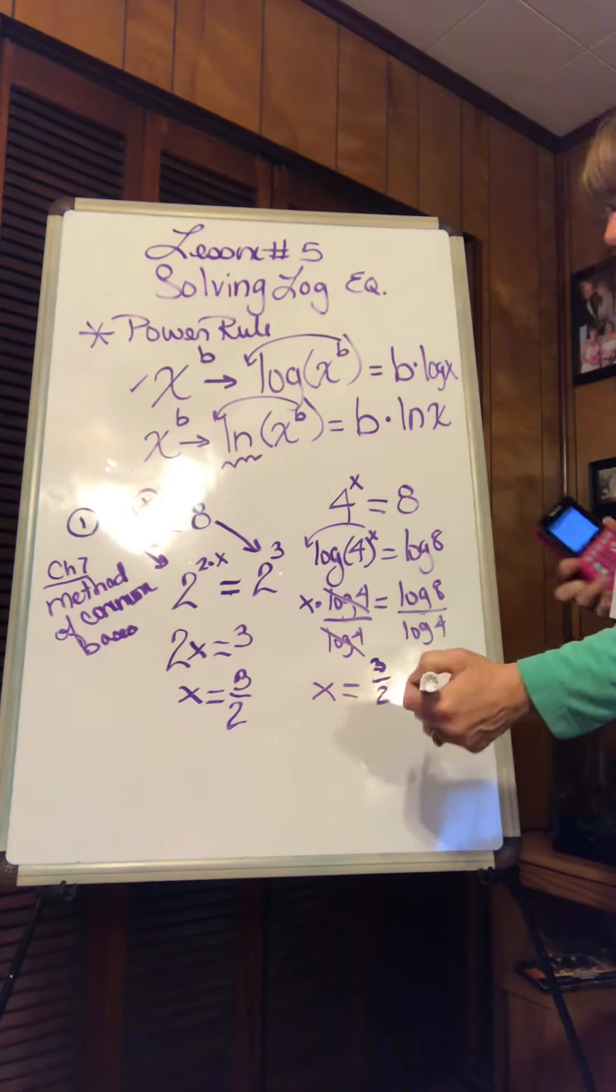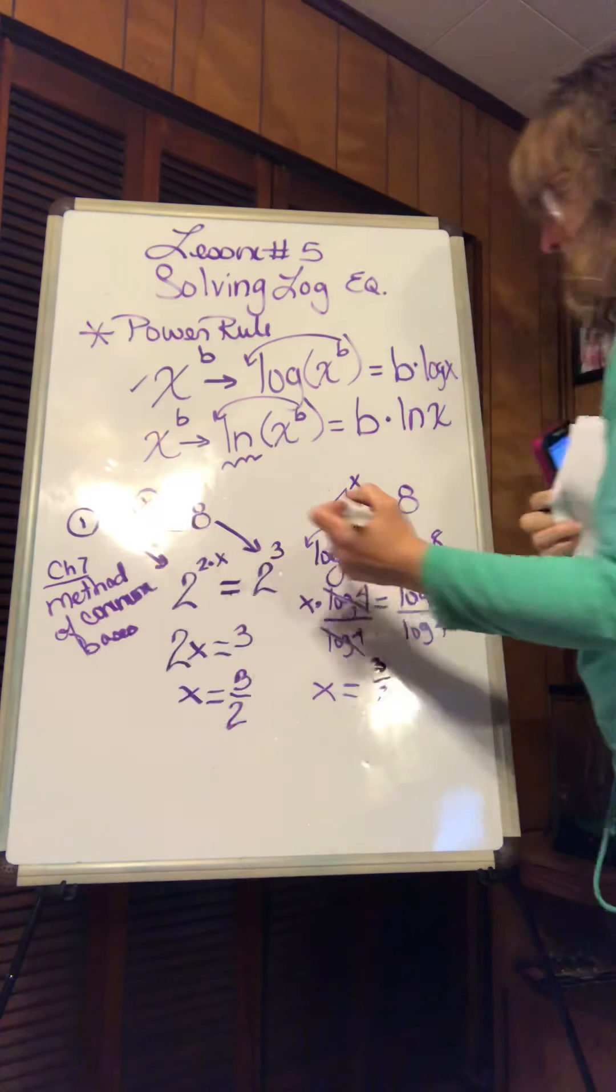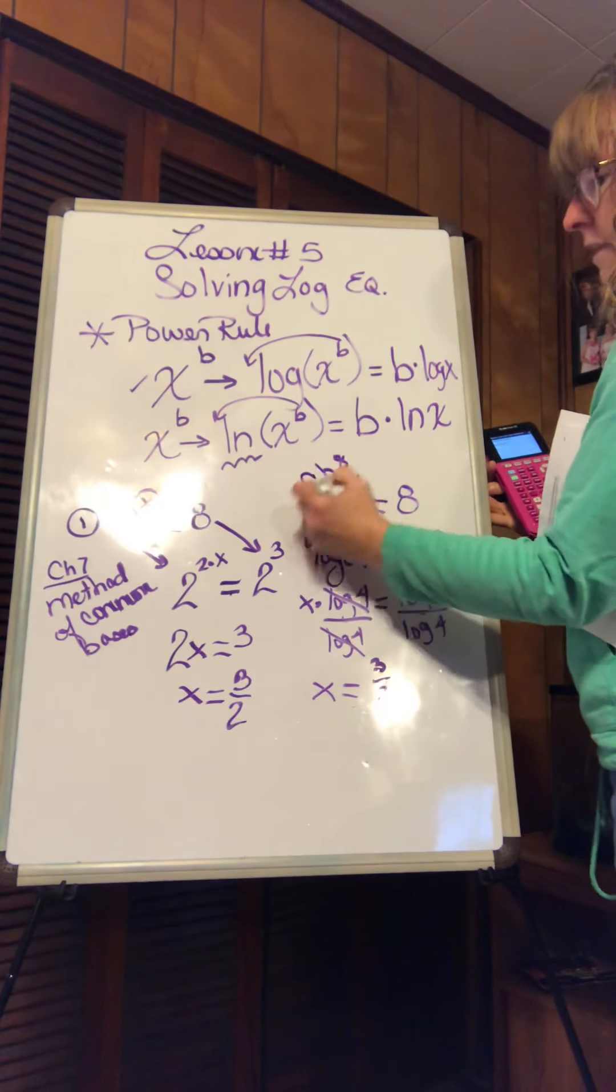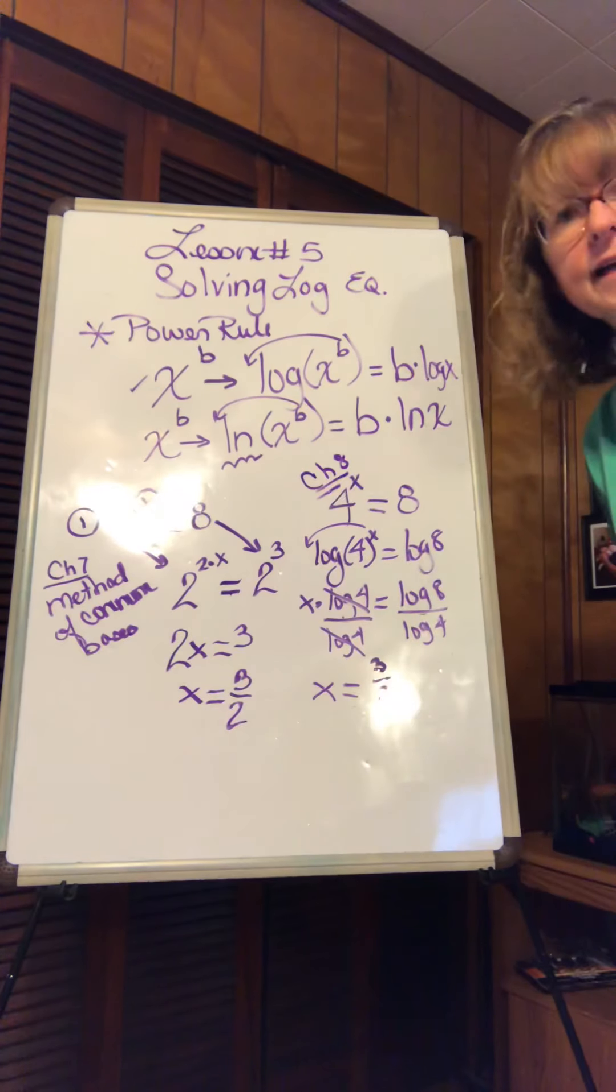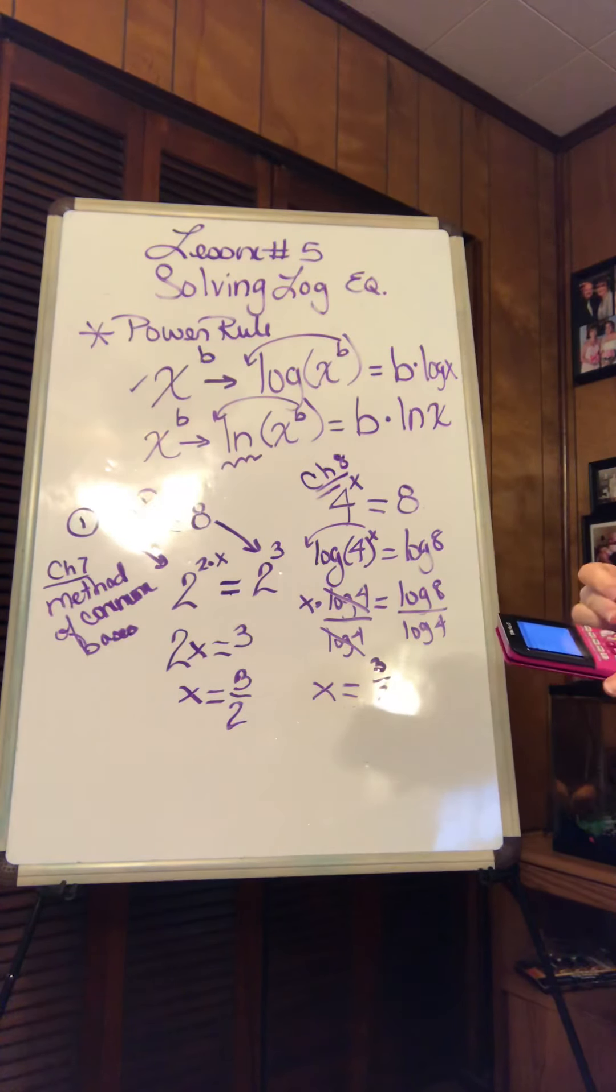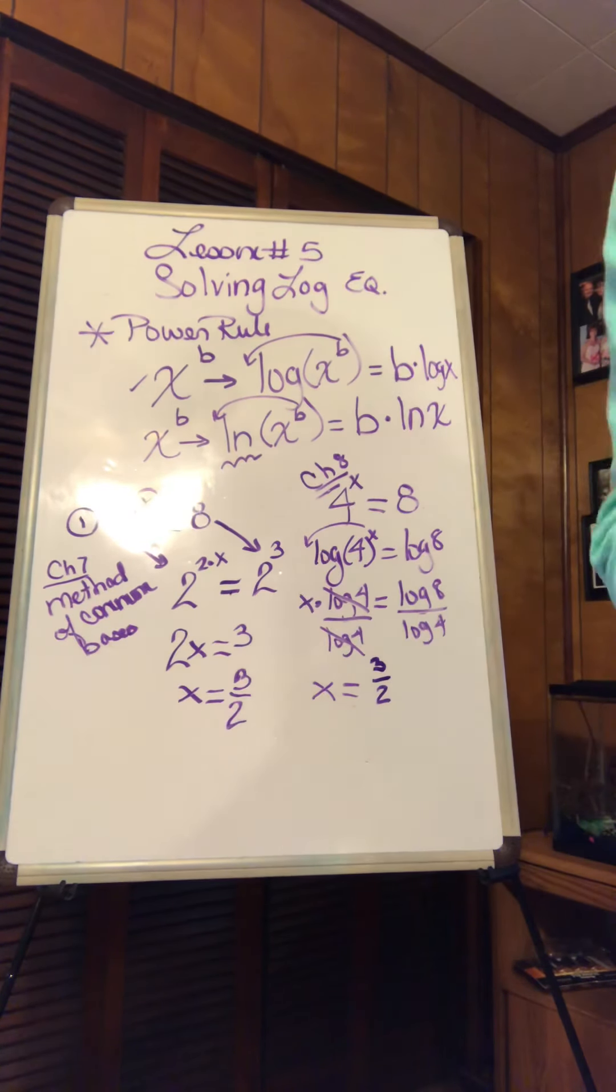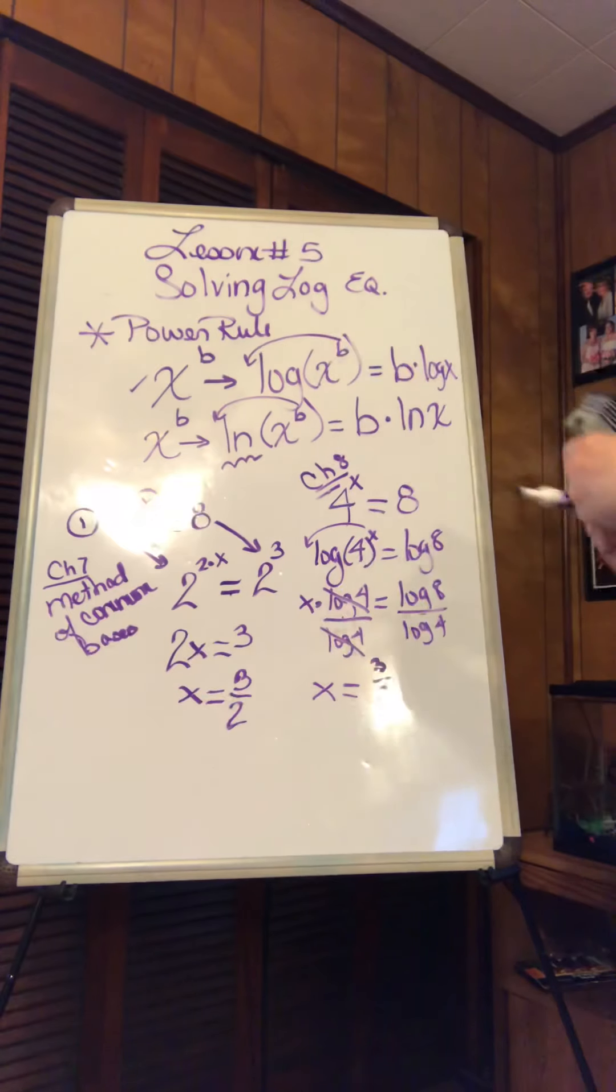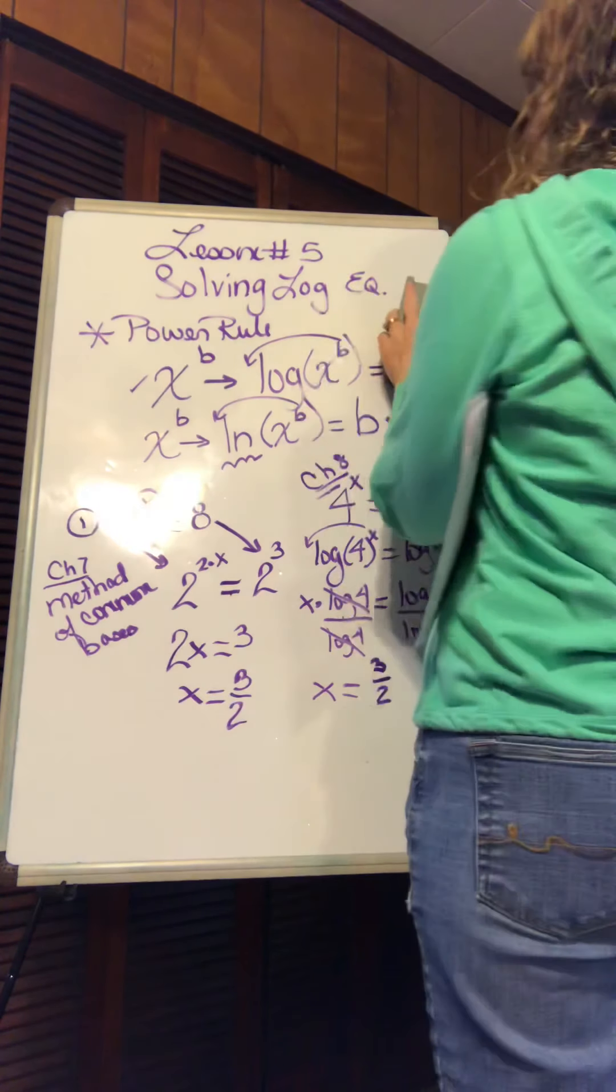Two methods. Chapter 7 method, and this is now the Chapter 8 method. Just like I've said too many times, there's power in having options. So the more you know, the more you can do. Let's take a look at Exercise 2 now.